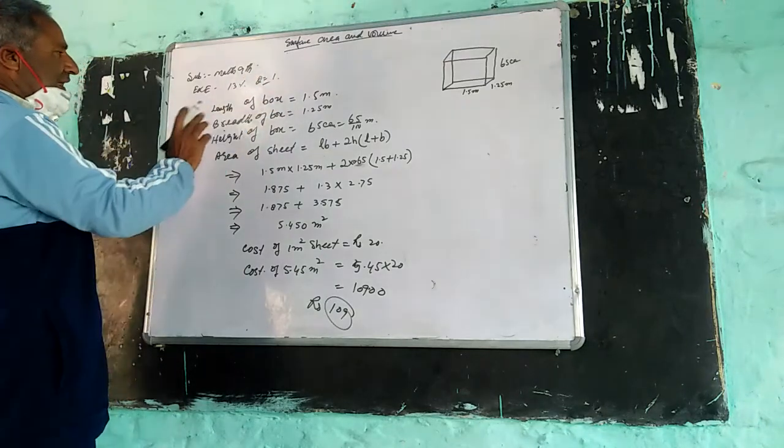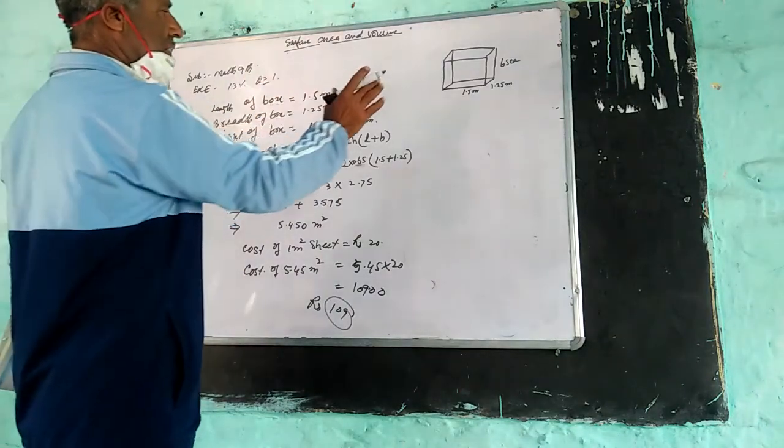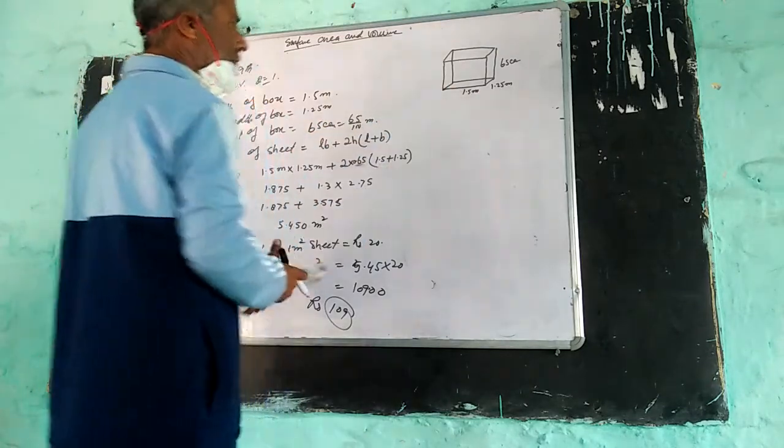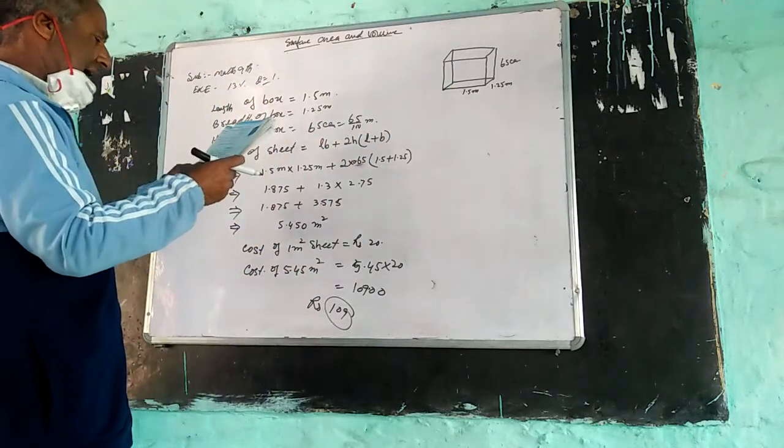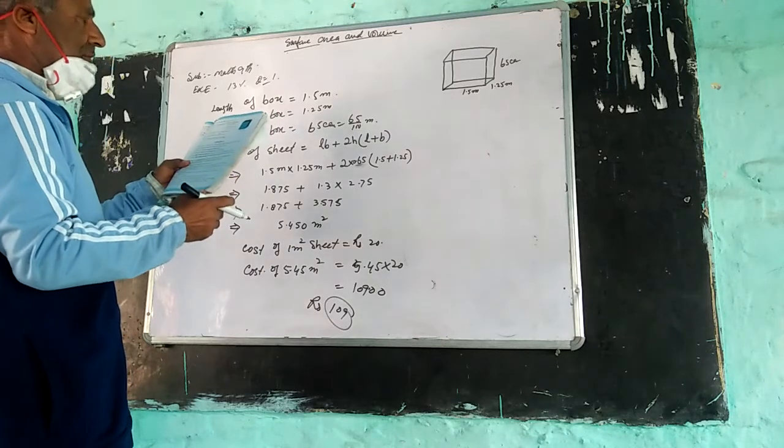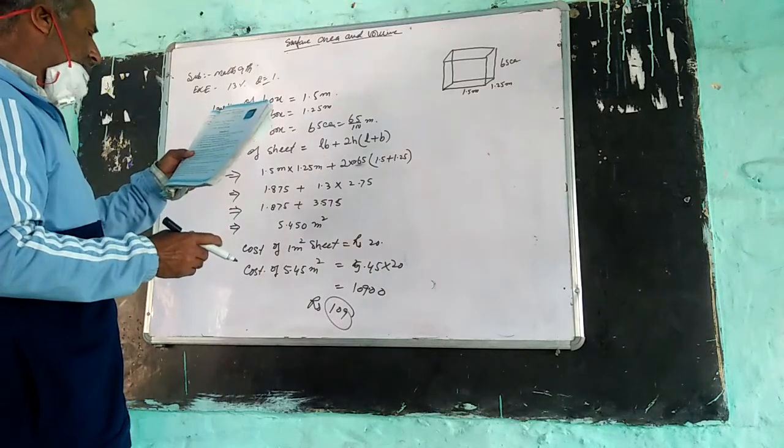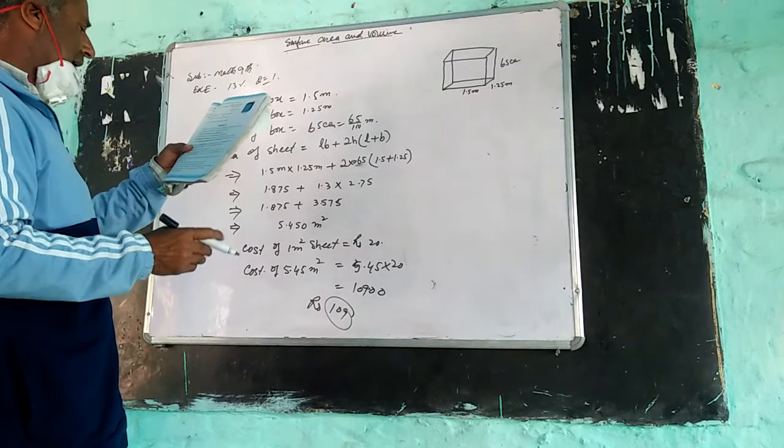The question states: the length, breadth and height of a box is 1.5 meters, 1.2 meters and 65 centimeters. We have to find, and it is open at the top.